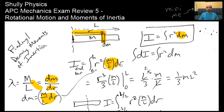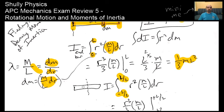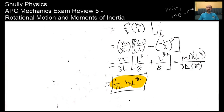The bounds are important: for a rod with axis at the end, the first radius is at zero and the last is at L, so integrate from 0 to L—you get one-third ML squared. If the axis of rotation is at the center, integrate from negative L/2 to positive L/2, where r equals zero at the center, and you get—surprise—one-twelfth ML squared. So that's the integration for a rod.